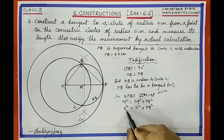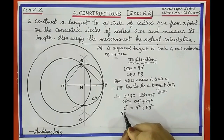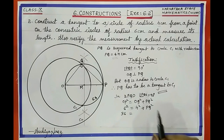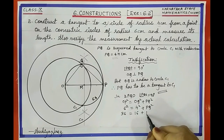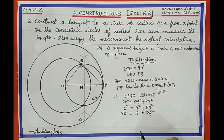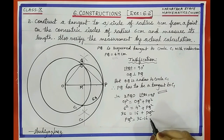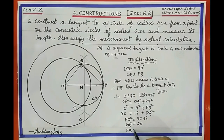6² = 36 and 4² = 16. So PQ² = 36 − 16 = 20. Therefore PQ = √20.